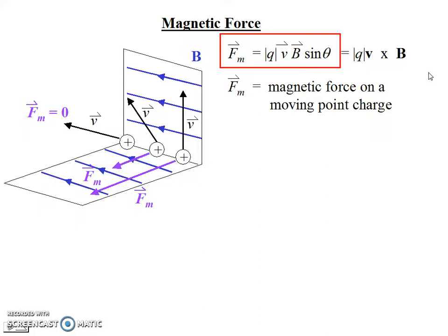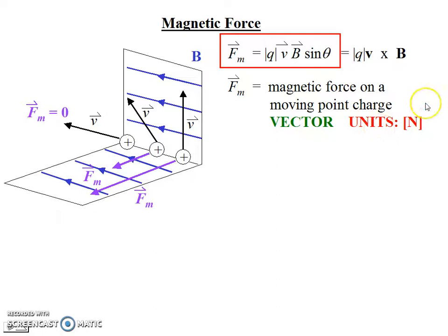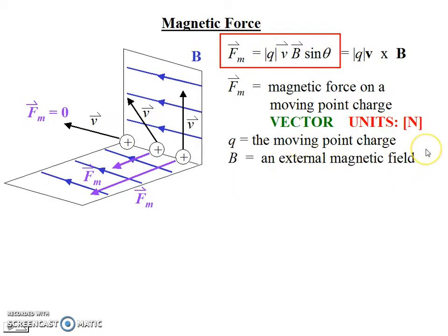Let's define our terms. F sub m is the magnetic force — specifically the magnetic force on a moving point charge. We'll have at least one other equation for magnetic force in a different situation, so it's important to define this one applies specifically to a moving point charge Q. This is a force, so it's a vector measured in newtons, just like any other force, but only a magnetic force on a moving point charge. Q is the moving point charge, and yes we do take the absolute value. B is an external magnetic field — a magnetic field produced by something external; as long as we know its strength and direction, that's all we need.